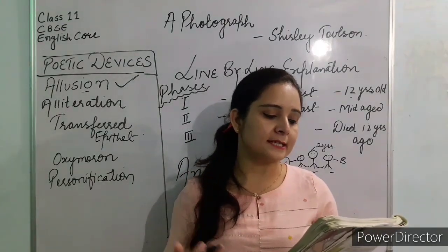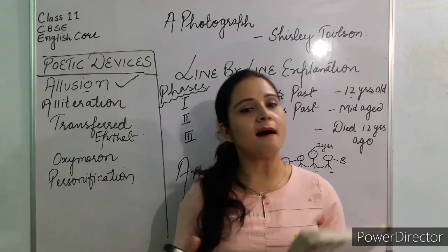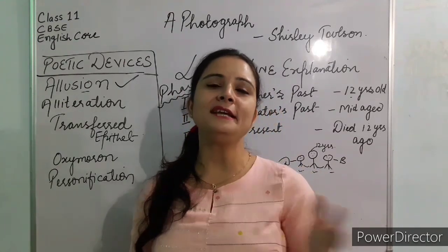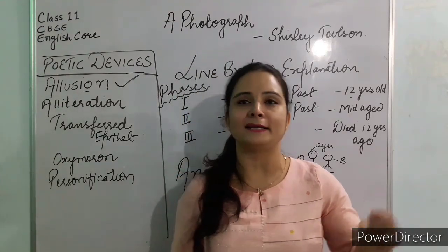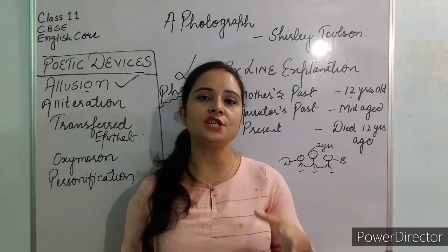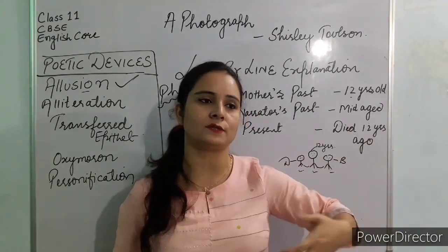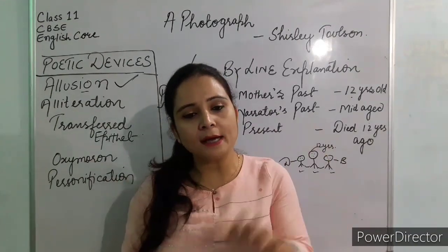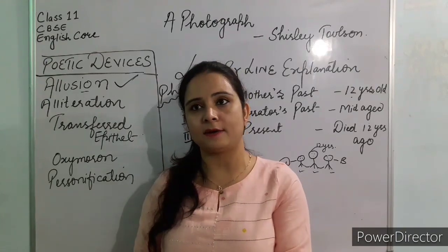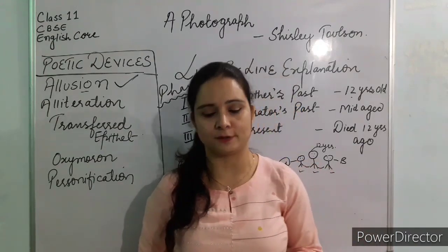The next line reads: 'All three stood still to smile through their hair at the uncle with the camera.' The poet tenderly describes how the girls' uncle captured the mother in space and time through the camera, at a point when she had a lot of life ahead of her — a mere child of 12. The camera becomes an interesting tool of nostalgia, always providing food for fond remembrances through pictures. 'Stood still' is an example of alliteration, with the consonant sound 'S' repeated.